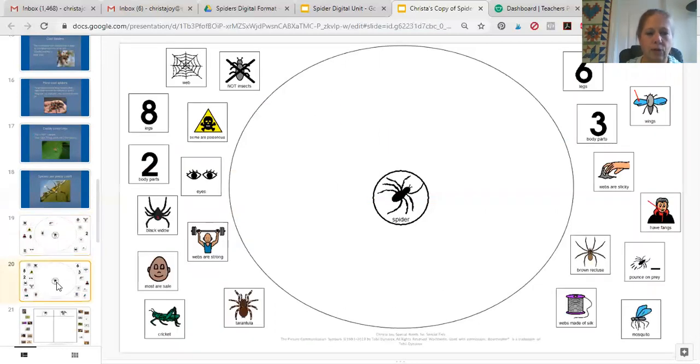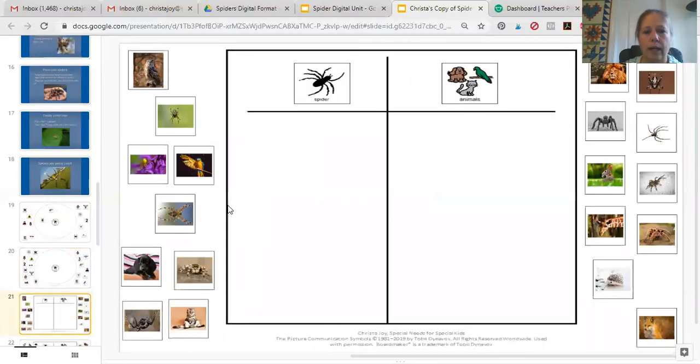The next circle map has some wrong answers mixed in, so they will have to be a little bit more careful about what they're putting in the circle map. We then go into some sorting activities.